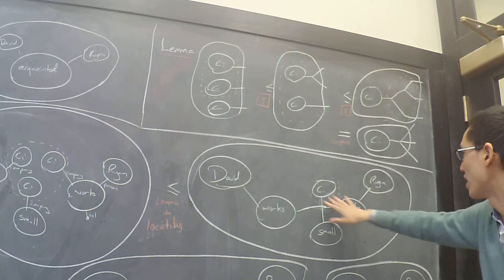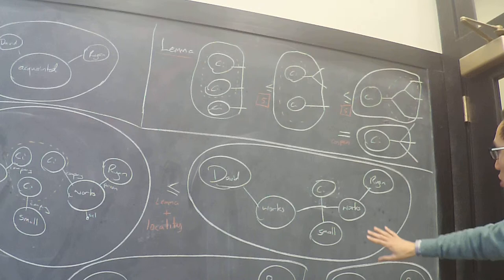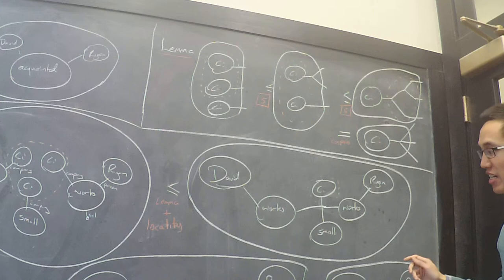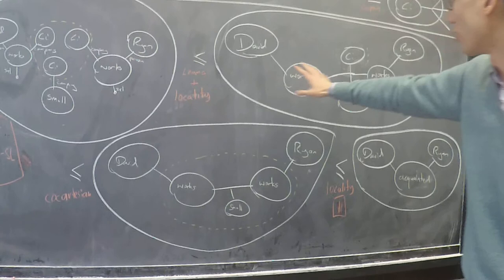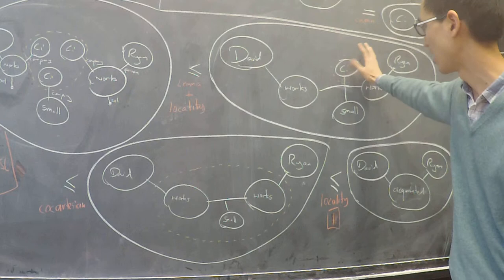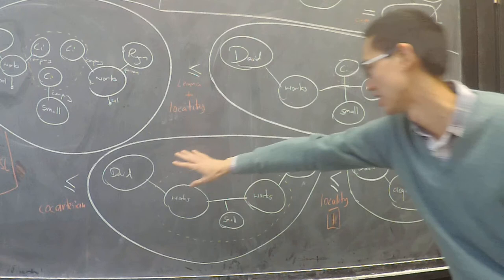But we can relax that and just say not only that David and Ryan work at some small company CI, at the small company CI, they just work at some small company, right? So using the co-cartesian nature of the functor we can relax this and just say that if we forget the company, we still have a fact. So this is: David and Ryan both work at some small company.